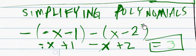Combine like terms. x and x are gone. So the answer is 3.